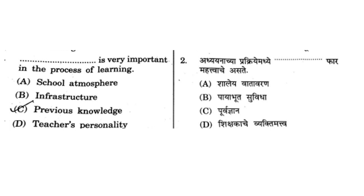Moving on to the next question: dash dash dash is very important in the process of learning. School atmosphere is mandatory but not something everybody has. Infrastructure is also a thing but not that important for learning. Teacher's personality is also a factor, but teaching is not dependent on personality. So the correct answer is A — previous knowledge. If you don't have background knowledge of a subject, it will be very difficult for a teacher to explain it.